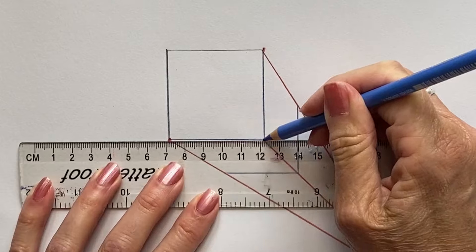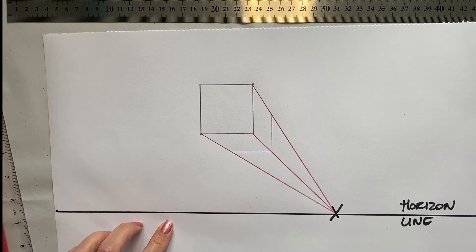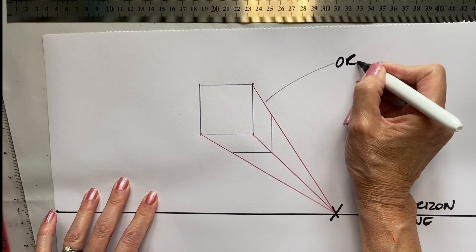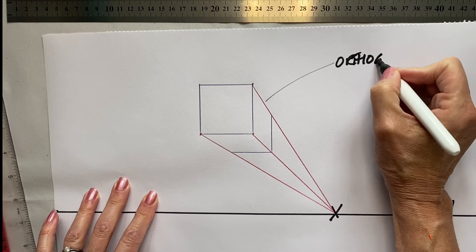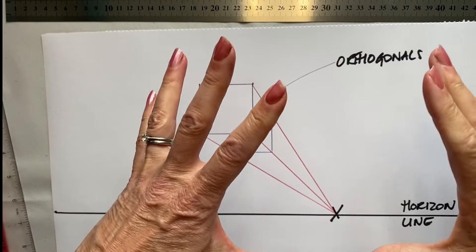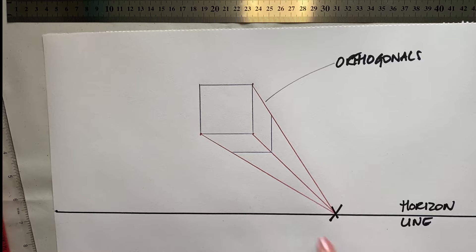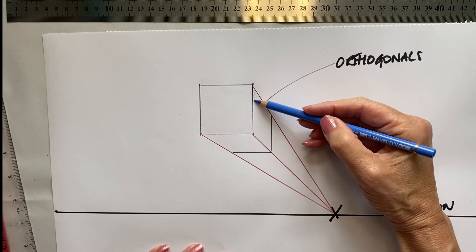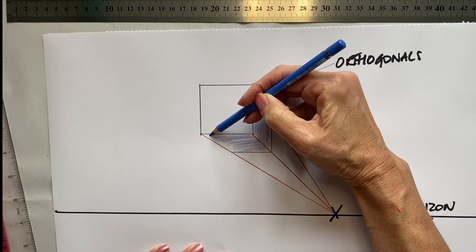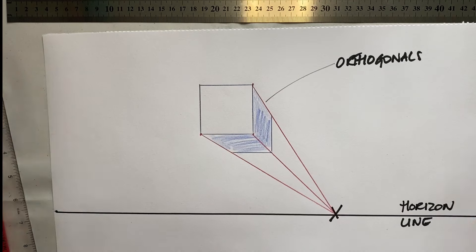Here we have our first solid cube. These lines — the orthogonals — in reality, if this were a real cube, would be parallel to each other. But they are not parallel when we are creating perspective. We can shade in the cube loosely. Here we have our horizon line and this cube is as if it's flying up in the sky.